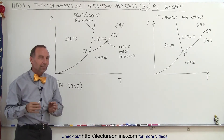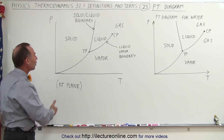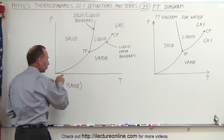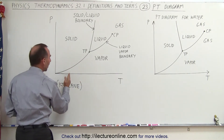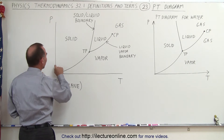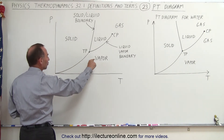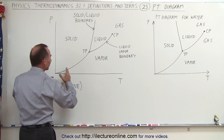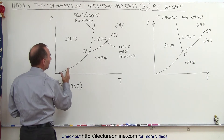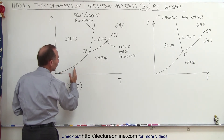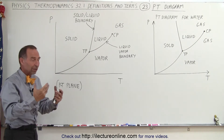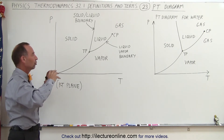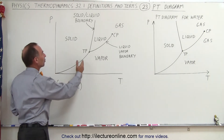To understand the PT diagram better, let's move along isotherms where the temperature doesn't change. At very low temperatures — since temperature increases to the right and decreases to the left — at very low pressure and temperature, a substance will be in the vapor state. As we increase the pressure, the vapor gets compressed and turns into a solid, requiring more and more pressure as the temperature increases, because higher temperature means more agitation and more kinetic energy.